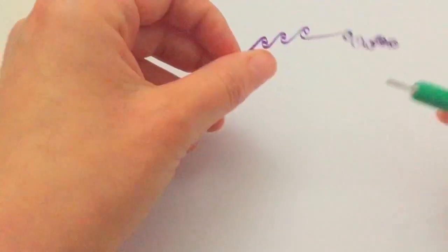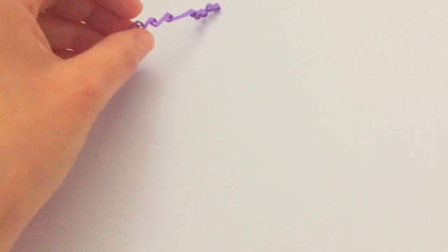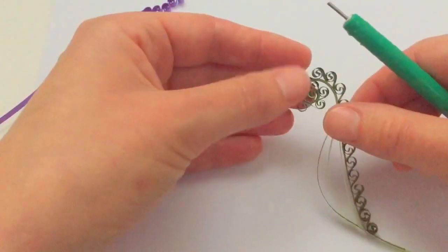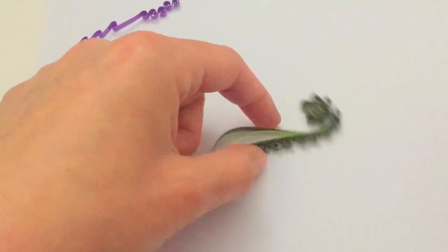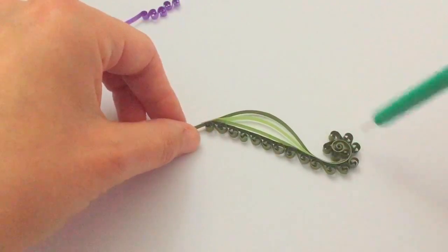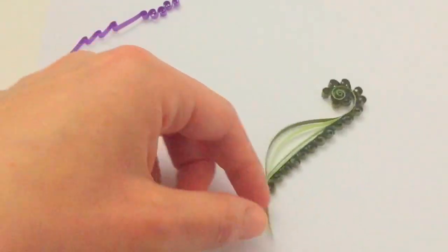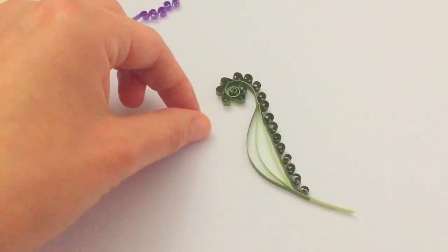When you get to the end of your strip, you can decide how you want to use these. Here's a swirl here that I added some onto the outside—sort of looks like a little piece of paisley pattern.